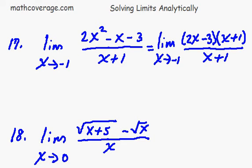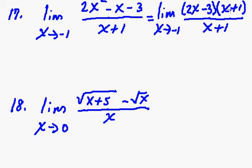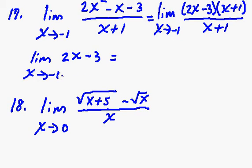Now, because these cancel out, I'm going to rewrite this limit of 2x minus 3. And then we just do direct substitution, plugging negative 1 in, and you end up with negative 5.